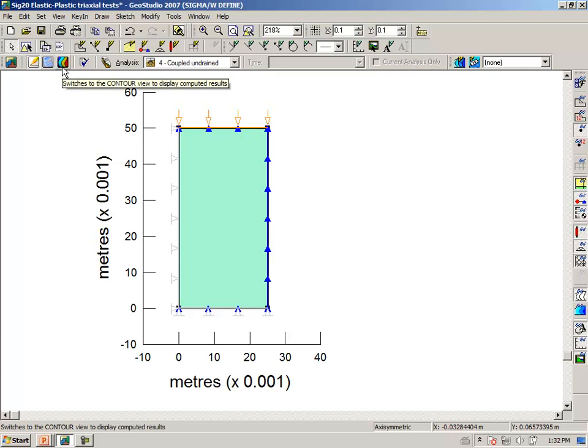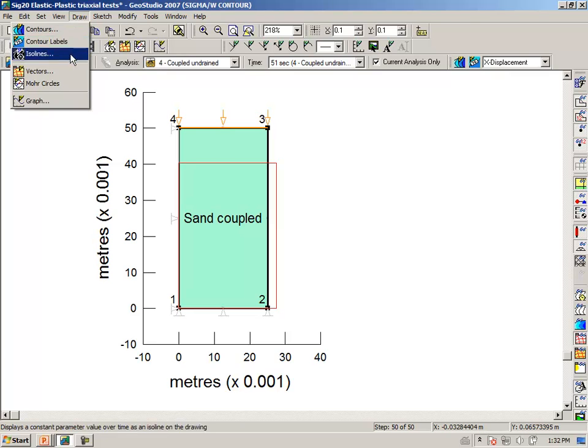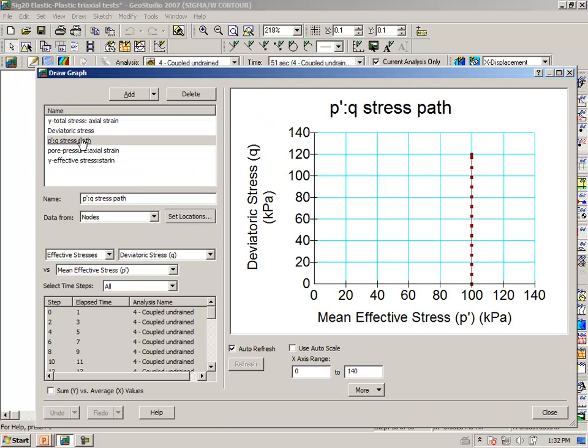Going to the results view then, under draw graph, first of all, the effective stress path. As I've already noted, the mean effective stress in an elastic-plastic model remains constant. Notice that the test ends at 120. We said that the critical state line had a slope of 1.2, which then makes sense that at the critical state line we have 120 divided by 100, making the slope here 1.2 to 1.